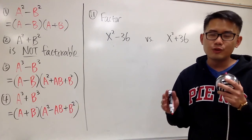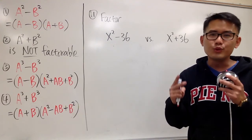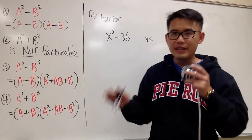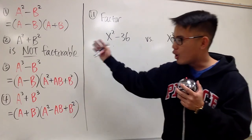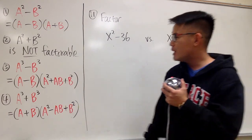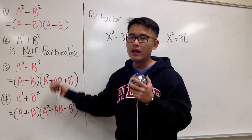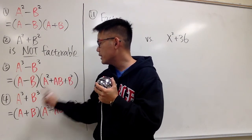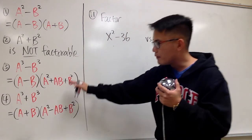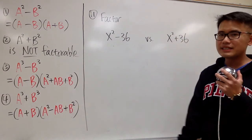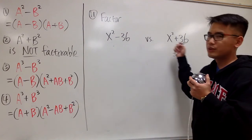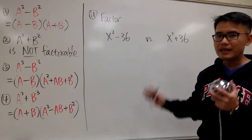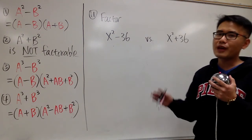In this video, I'm going to show you how to factor a polynomial that has only two terms. Most likely, we'll be using one of these formulas. We have to remember all of these formulas really well, especially number 3 and number 4 — these are the harder ones. This is the difference of two cubes, and this is the sum of two cubes, but we'll go over those later. For now, let's focus on formulas 1 and 2, and I want to compare them side by side.